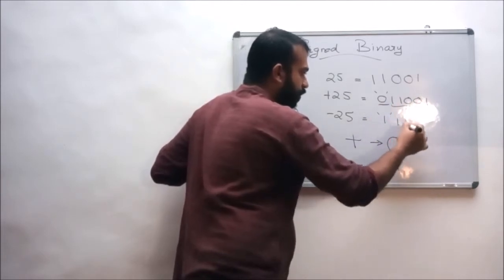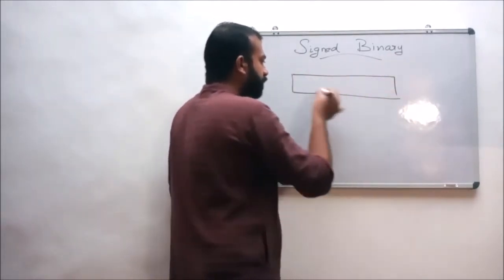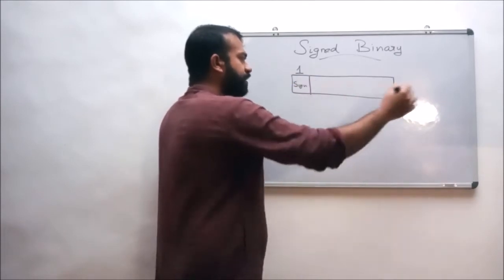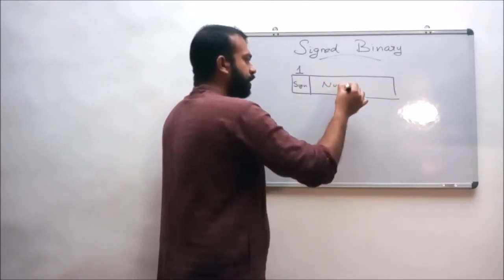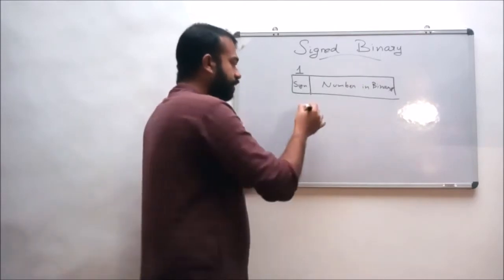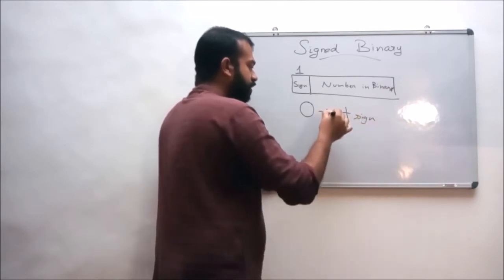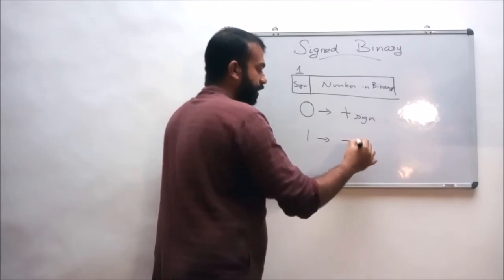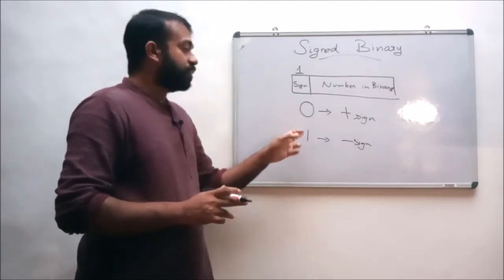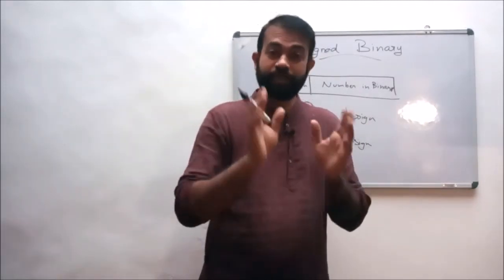For a signed binary number, the first bit represents the sign and the rest represent the magnitude in binary. The bit 0 represents the positive sign and 1 represents the negative sign. The MSB shows whether the number is positive or negative. For an 8-bit binary number, the first bit or MSB is the sign bit and the remaining 7 bits represent the actual number.